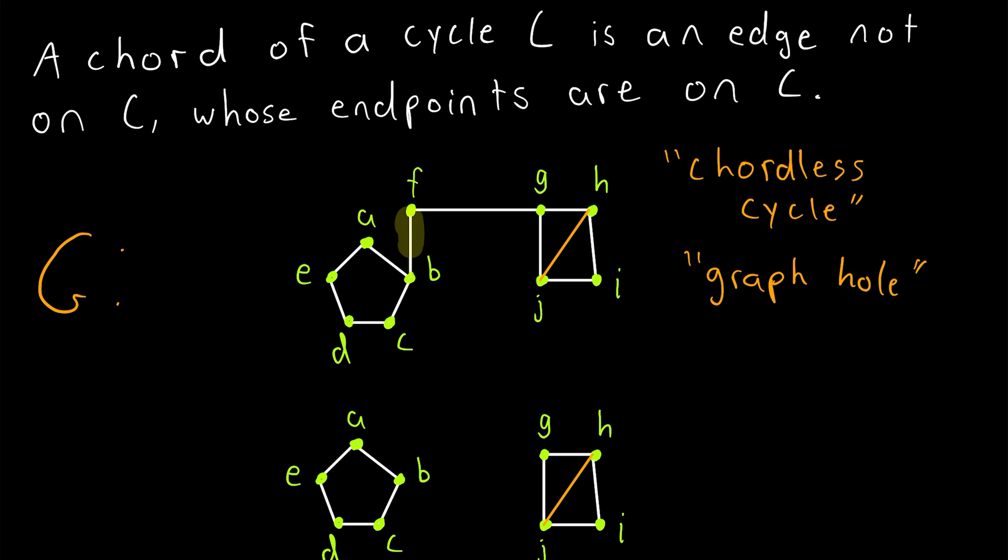It is an edge that doesn't lie on this cycle, and one of its endpoints is on the cycle, but its other endpoint is not on the cycle, so it's not a chord. Both endpoints of a chord need to be on its cycle.